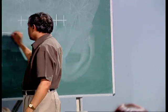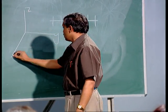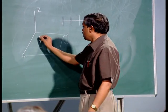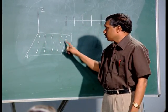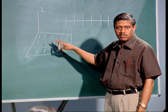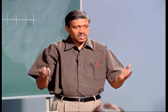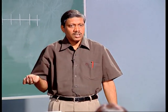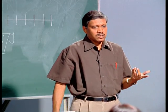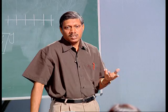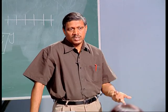Besides linear and planar arrays, you can have triangular, spherical, or circular antenna arrays. The name of the array depends on the geometry of element placement. Triangular arrays occupy less space compared to rectangular arrays, so when space is a constraint, people prefer triangular configurations — though you must verify that the radiation pattern and directionality remain within acceptable limits.